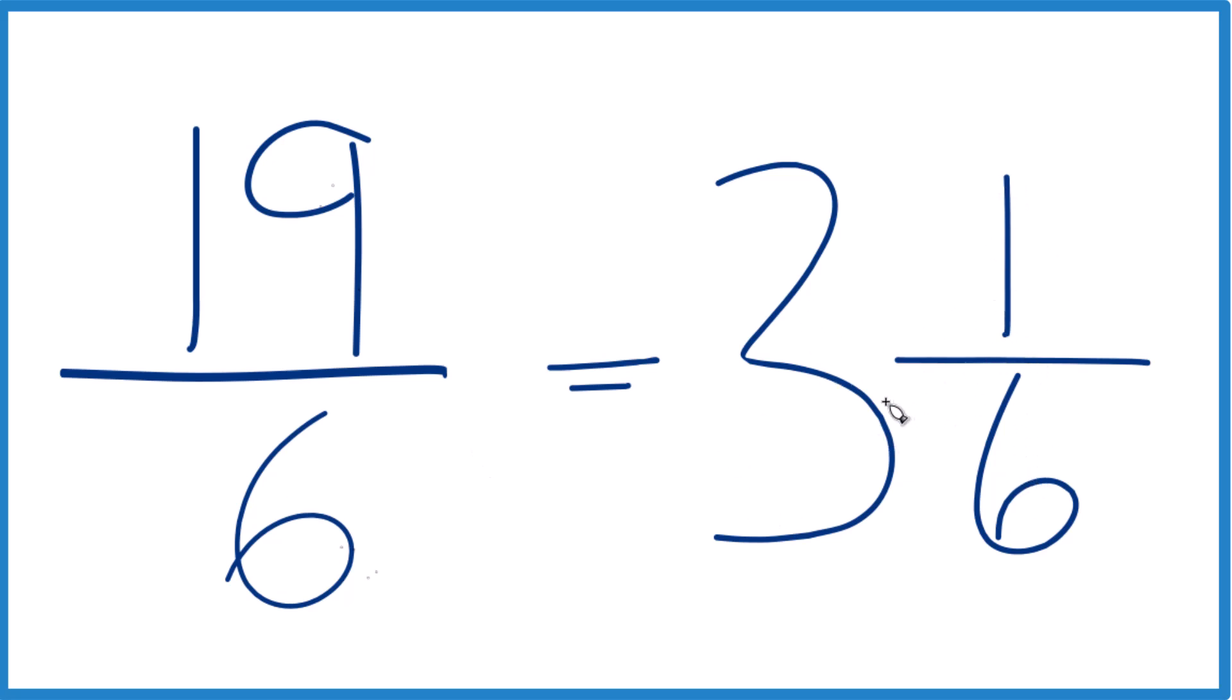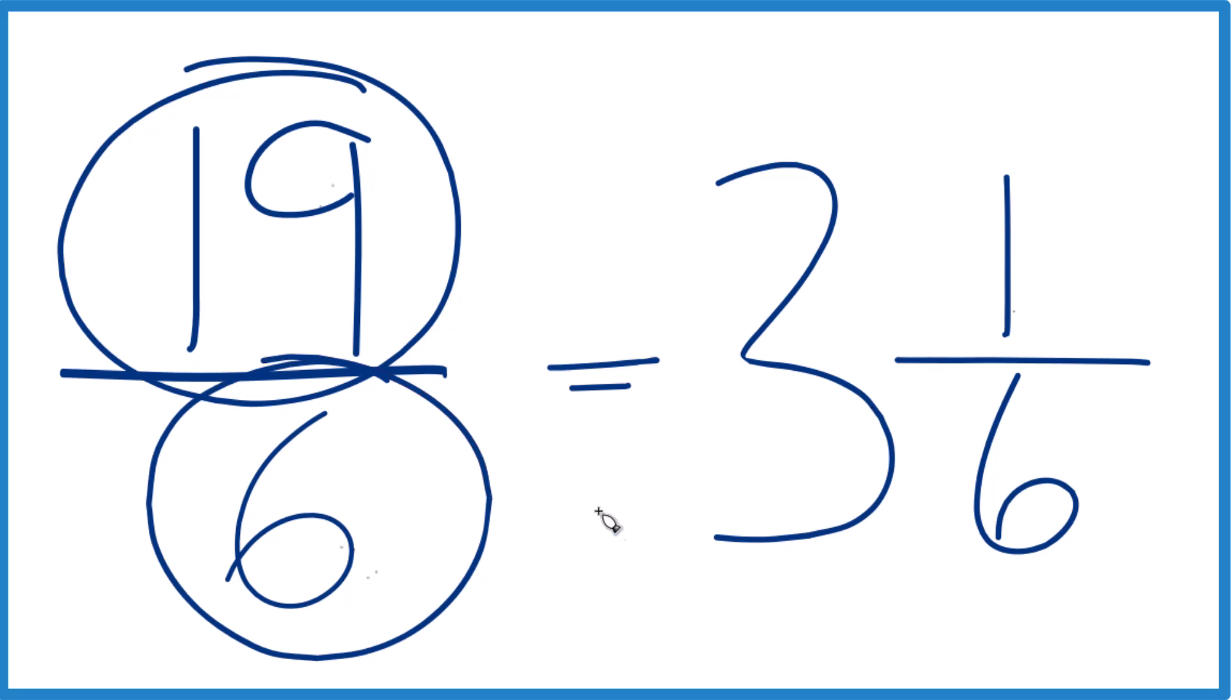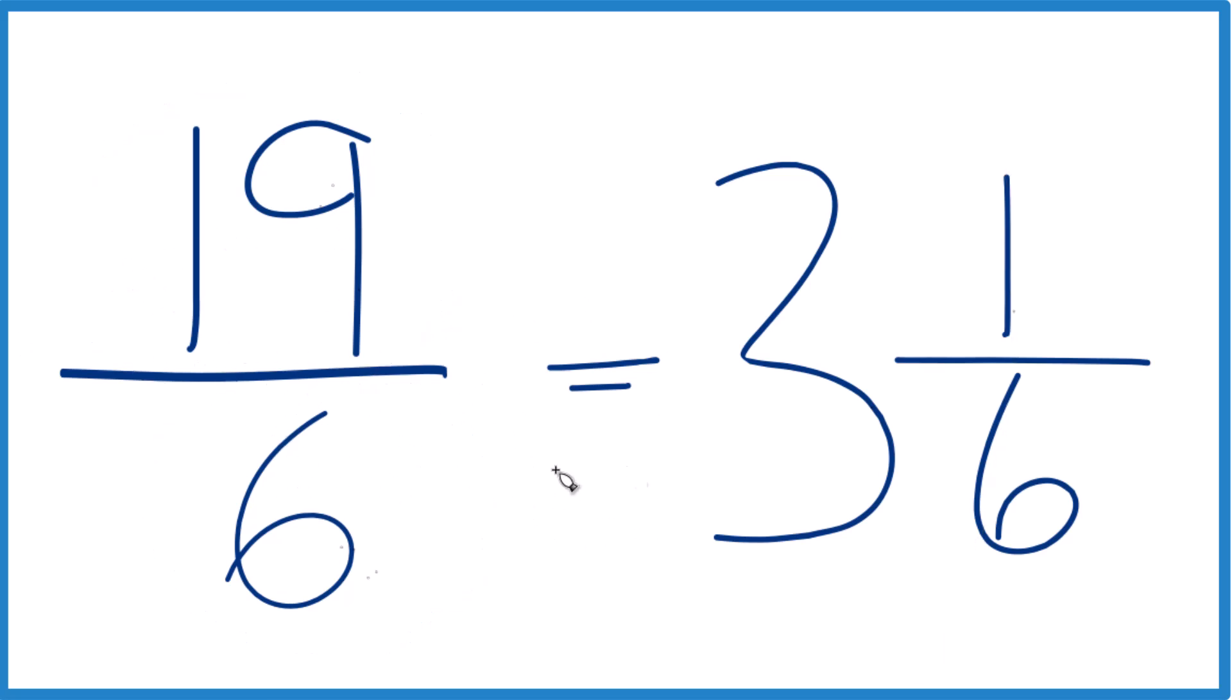And we can check that. 3 times 6 is 18. 18 plus 1, that's 19. Keep the denominator the same, and that's it. This is Dr. B simplifying the fraction 19/6. It is already simplified, and we can also write it as a mixed fraction, 3 and 1/6.